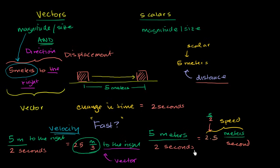Easy way to think about it: if you're talking about change in position and you specify the direction, you're talking about displacement. If you don't specify the direction, you're talking about distance. If you're talking about how fast something is going and you give the direction, you're talking about velocity. If you don't give the direction, you are talking about speed. In the next video, we're going to start working with these to solve some basic questions about how fast something is going, how far it might travel, or how long it might take to get someplace.